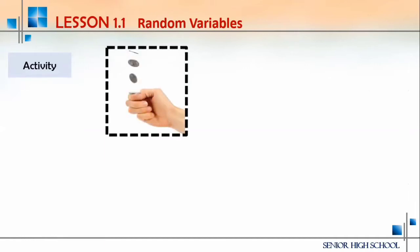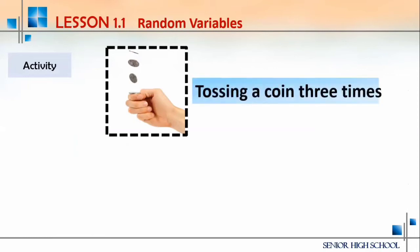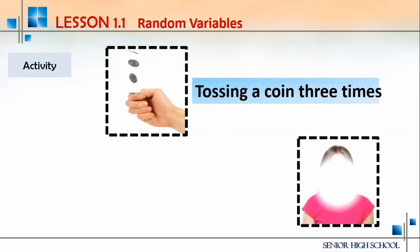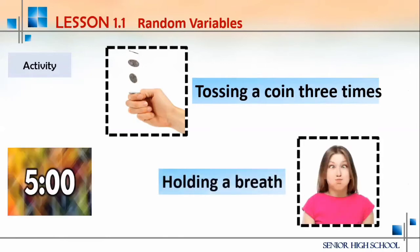Here is an activity. If you're tossing a coin three times, what will be the sample space? Next, holding a breath for five minutes — can you do this? In order to experience what this lesson is about, apply it and do it on your own. If we toss a coin three times, what are the possible outcomes? And for holding a breath, what are the possible outcomes when holding it for five minutes or less?